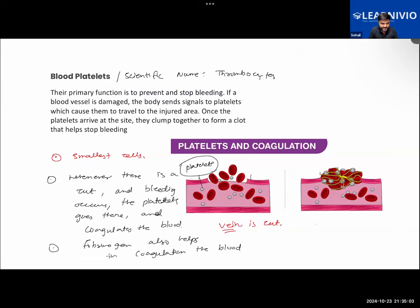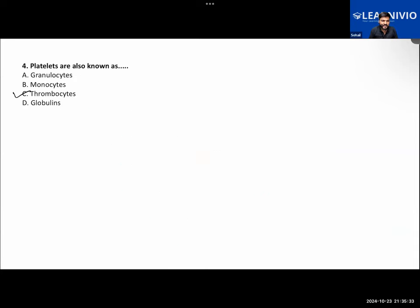Further, we learnt about blood platelets. They are also scientifically called thrombocytes, and they are the smallest of all the cells present in your blood. Wherever there will be bleeding in the body, wherever there is a cut - a blood vessel, artery or vein is cut - platelets will go there and bind with the red blood cells. They will form a clot and hence stop the bleeding in our body.